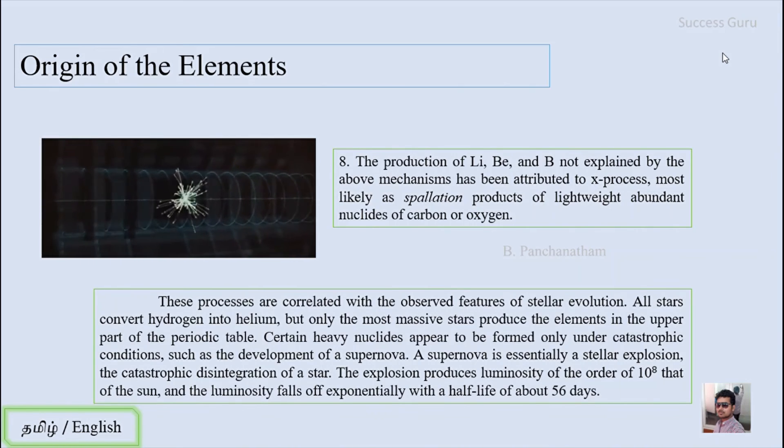These processes are correlated with the observed features of stellar evolution. All stars convert hydrogen into helium, but only the most massive stars produce elements in the upper part of the periodic table. Certain heavy nuclei appear to form only under catastrophic conditions, such as development of supernovas. A supernova is essentially a stellar explosion—the catastrophic disintegration of a star. The explosion produces luminosity of the order of 10^8 that of the sun, and the luminosity falls off exponentially with a half-life of about 56 days.